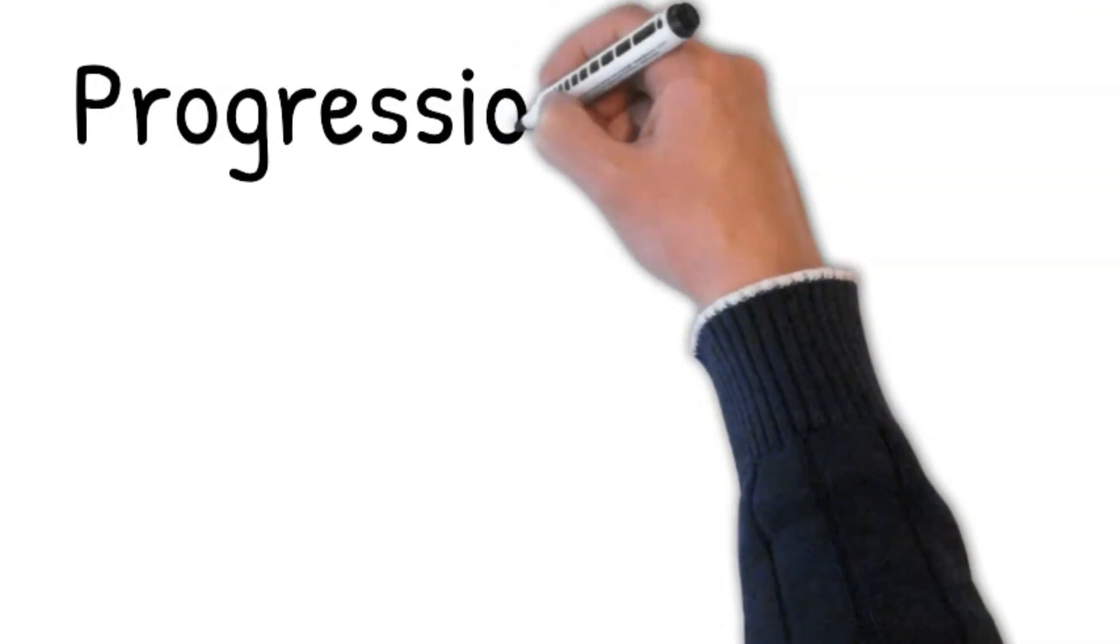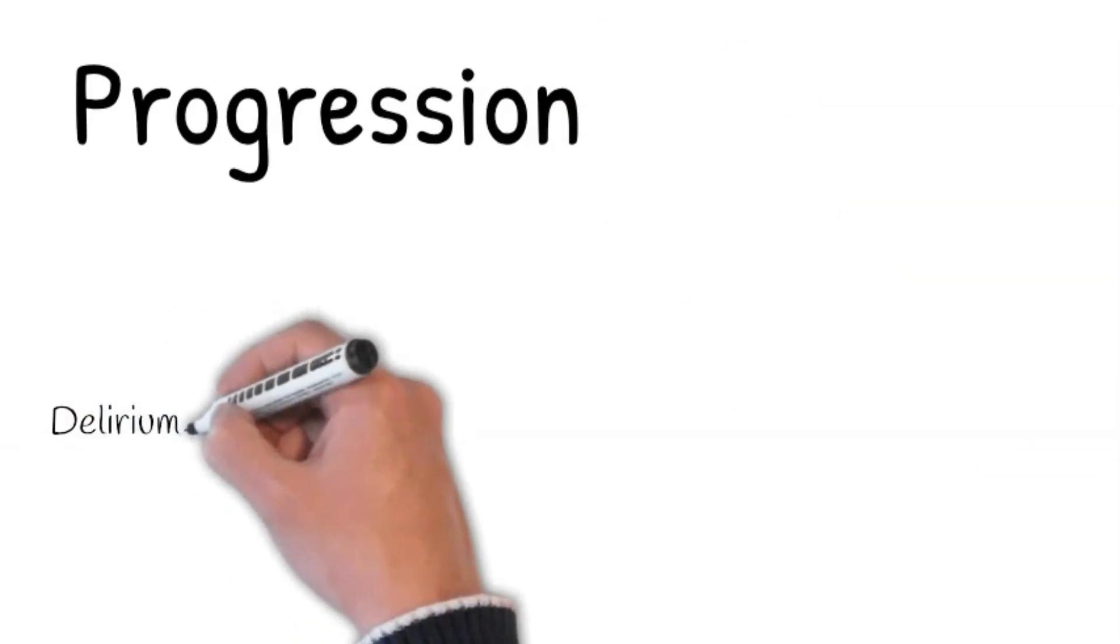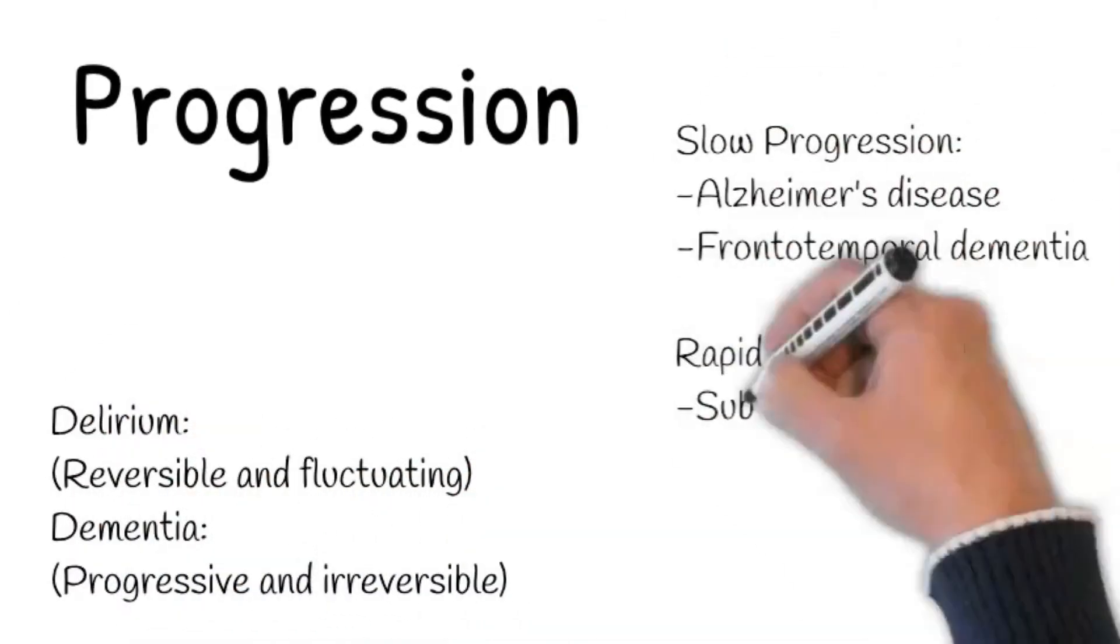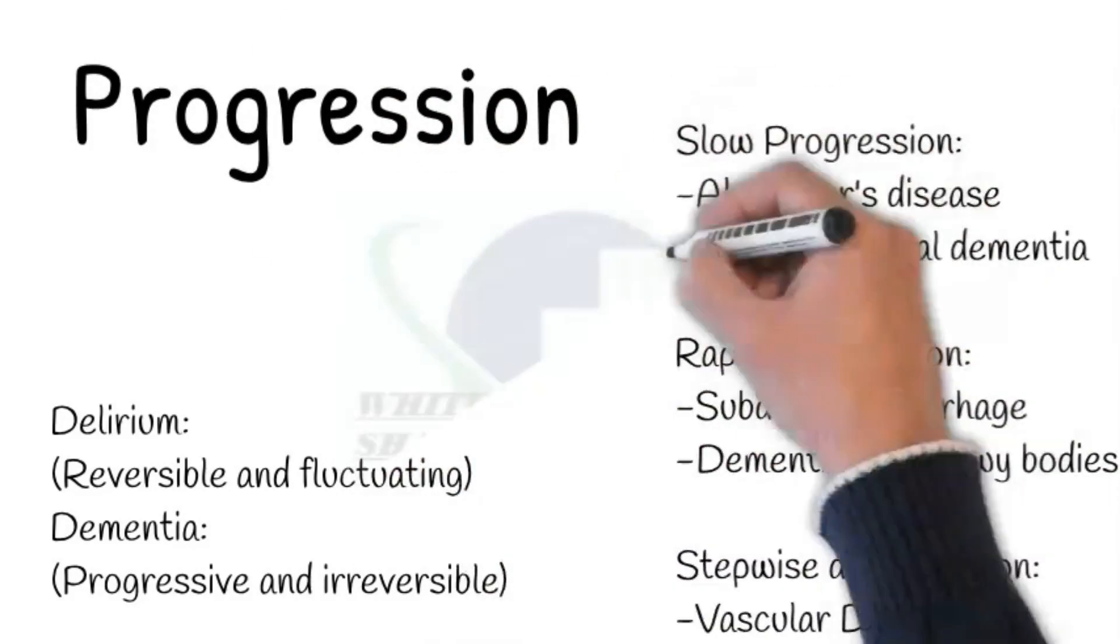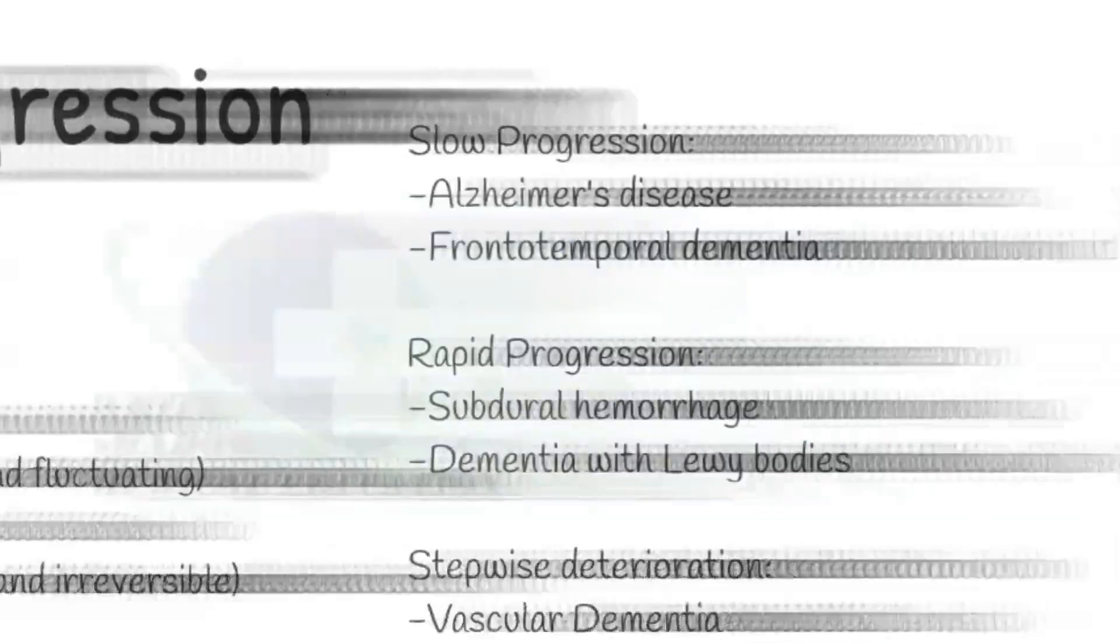Alzheimer's disease and frontotemporal dementia progress slowly. The rapid decline is seen in subdural hemorrhage and CNS tumors, dementia with Lewy bodies, and dementia associated with Parkinson Plus syndromes. A stepwise deterioration of symptoms is a feature of vascular dementia.